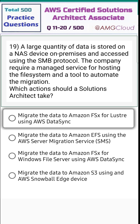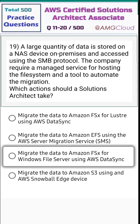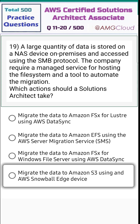Option one: migrate the data to Amazon FSx for Lustre using AWS DataSync. Option two: migrate the data to Amazon EFS using the AWS Server Migration Service. Option three: migrate the data to Amazon FSx for Windows File Server using AWS DataSync. Option four: migrate the data to Amazon S3 using AWS Snowball Edge device.